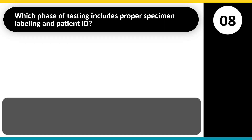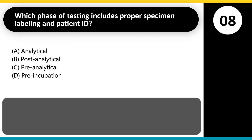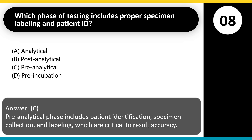Which phase of testing includes proper specimen labeling and patient ID? A. Analytical. B. Post-analytical. C. Pre-analytical. D. Pre-incubation. Answer: C. The pre-analytical phase includes patient identification, specimen collection, and labeling, which are critical to result accuracy.